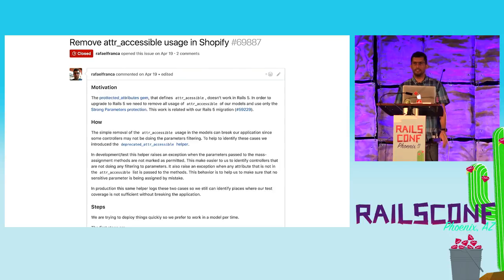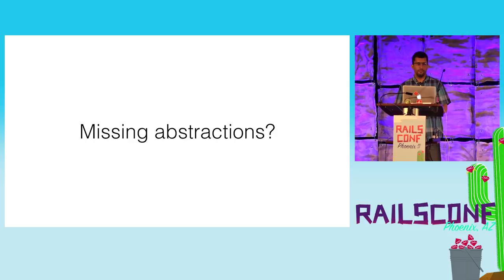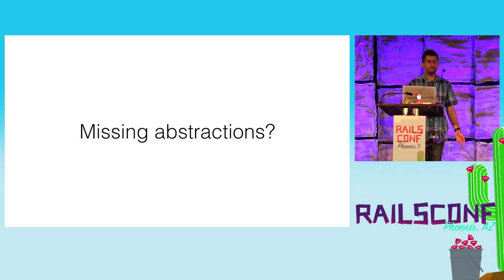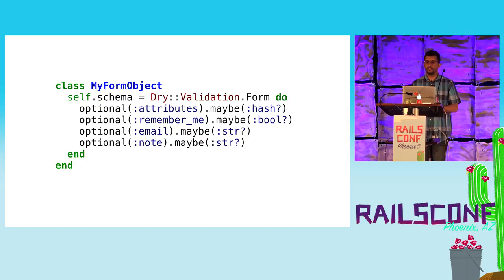In some cases it was as simple as moving the attr_accessible calls to the controllers assigning attributes to those models. But in other cases we found we were missing some kind of abstraction. For massive forms with a lot of attributes, we created a form object abstraction using the Virtus validation gem to filter all attributes before sending them to the model.